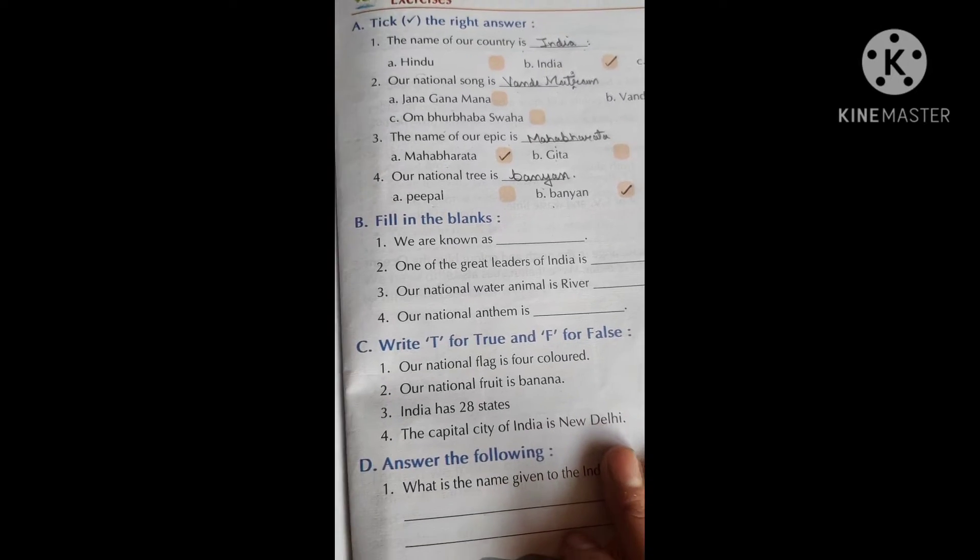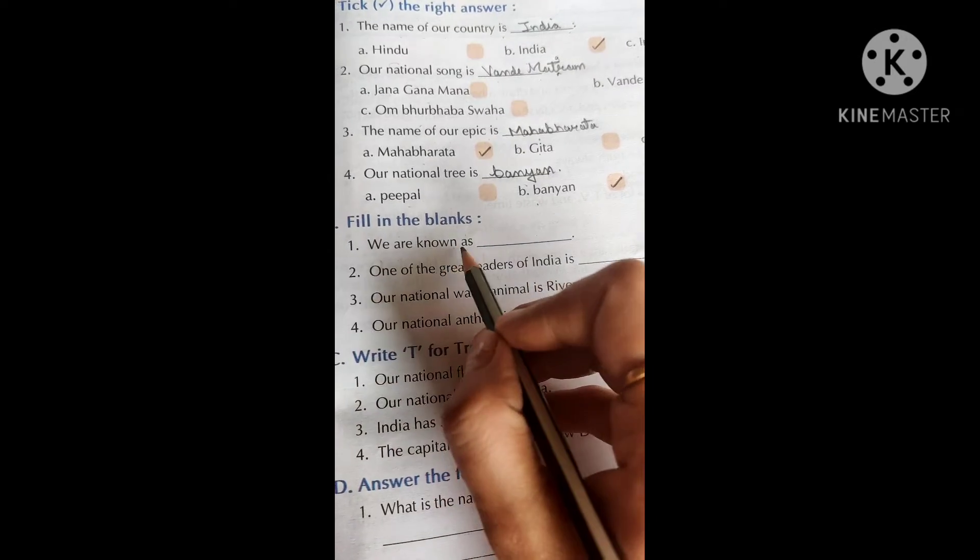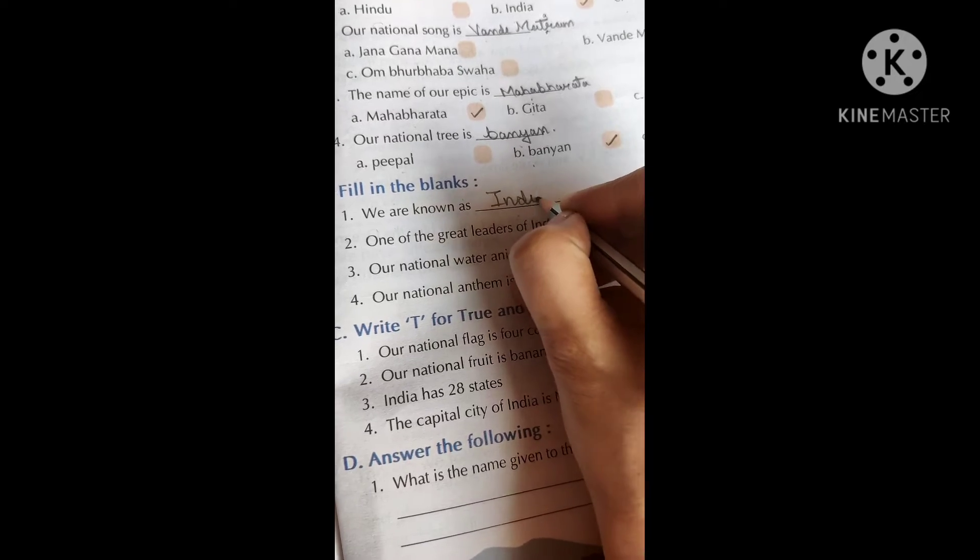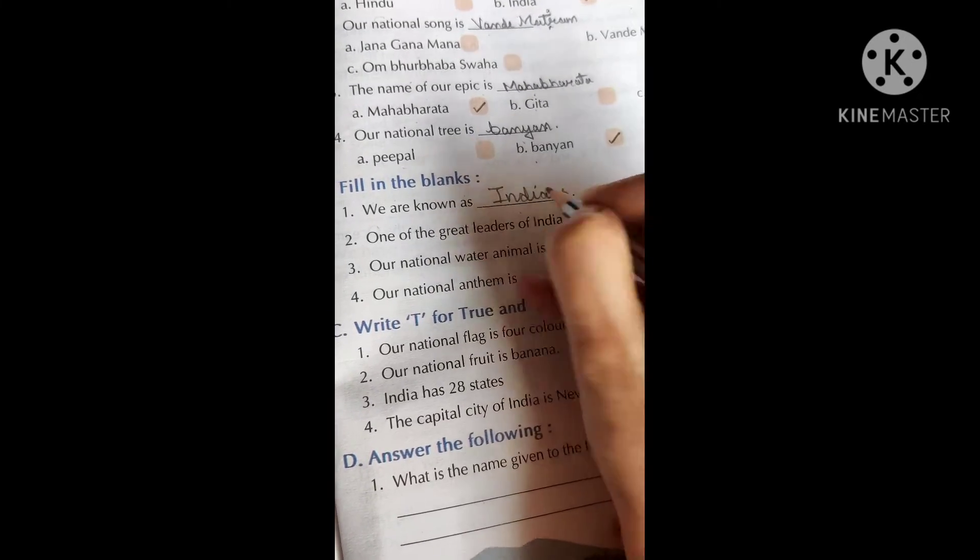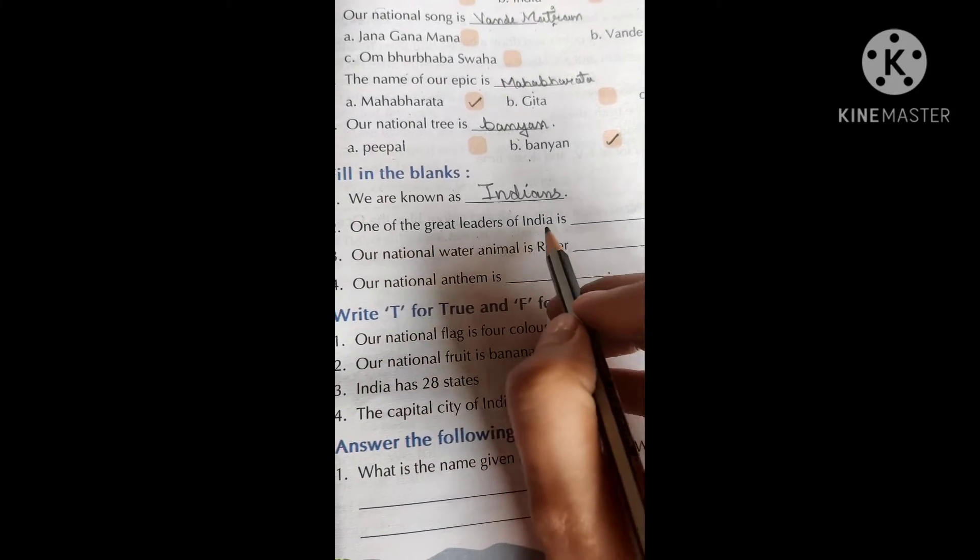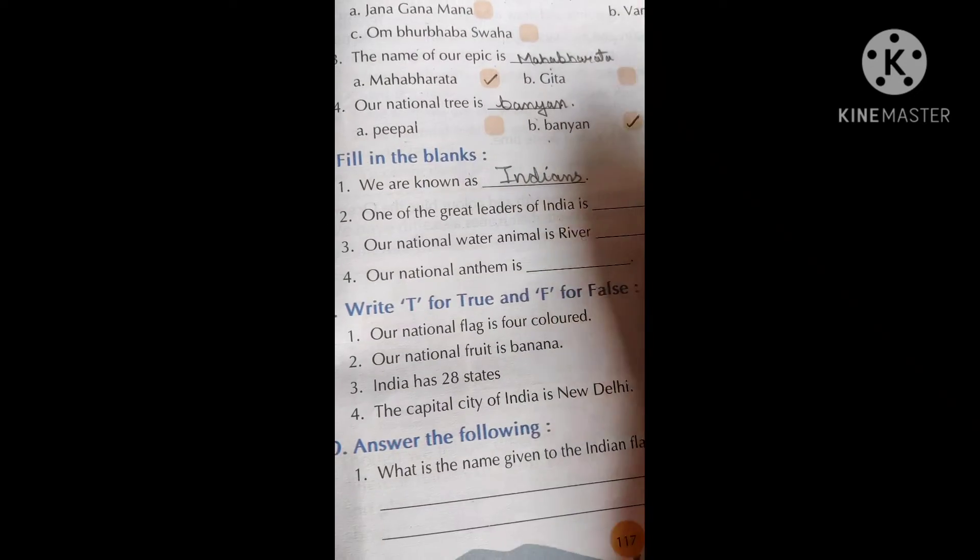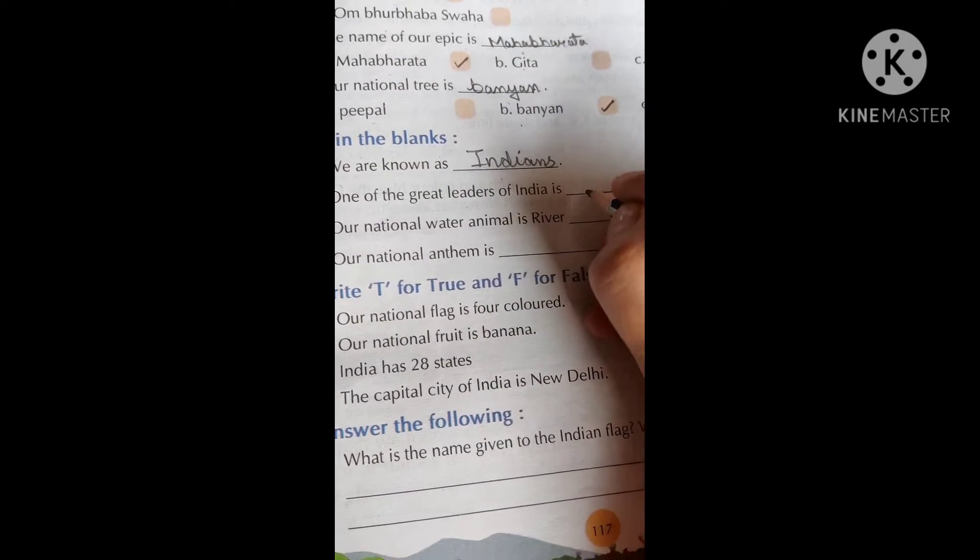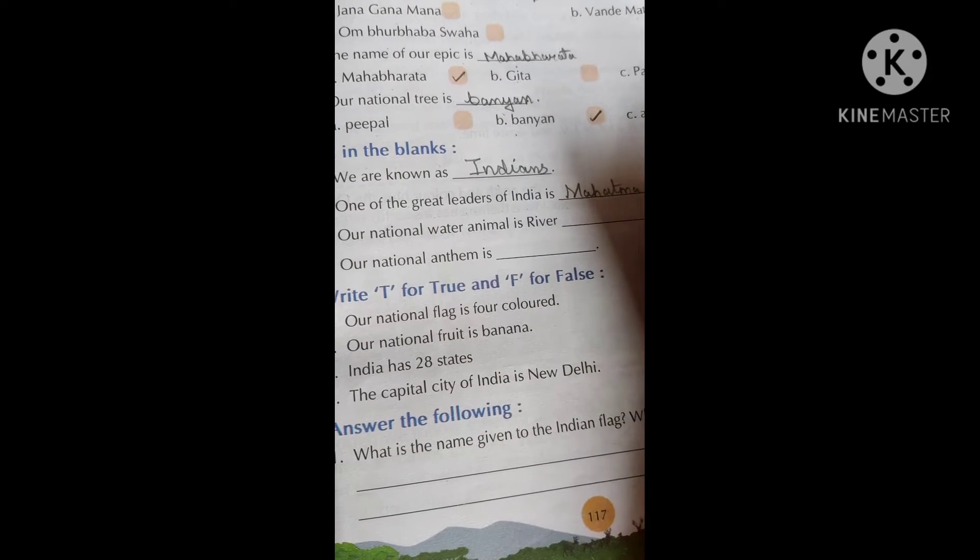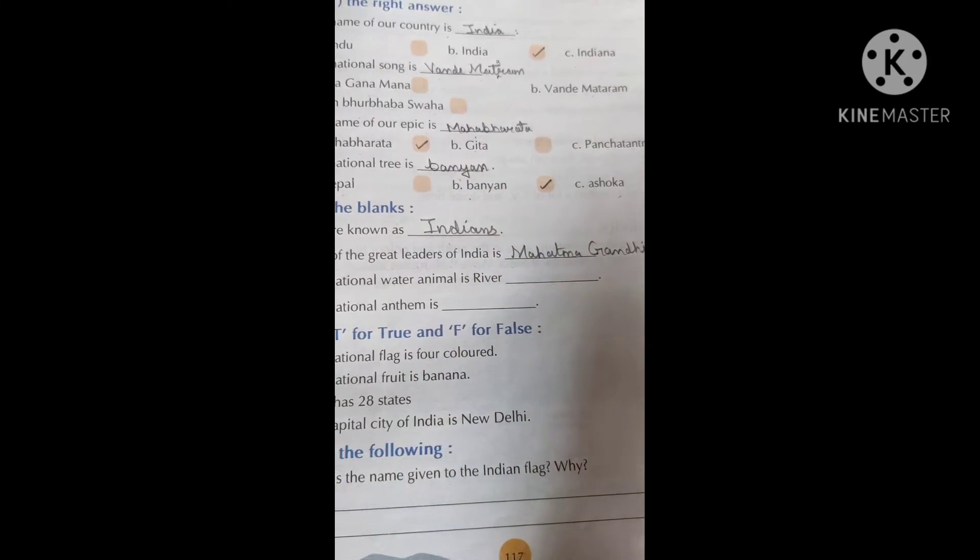Now let's do the B part: Fill in the blanks. We are known as dash. We are known as Indians because we live in India. One of the great leaders of India is - who is the great leader of India? You can say any name like Mahatma Gandhi. You can write any leader's name.